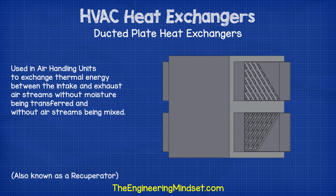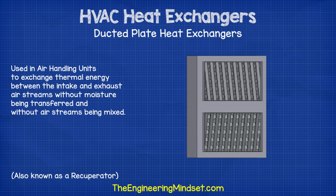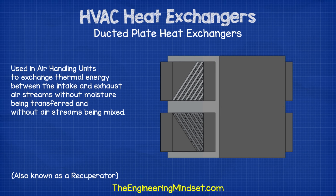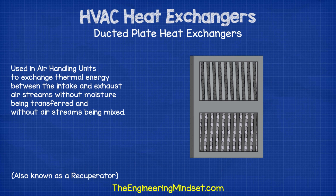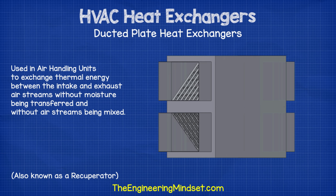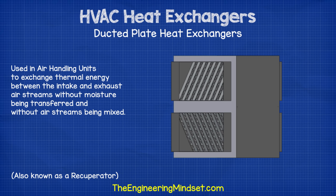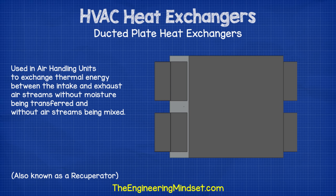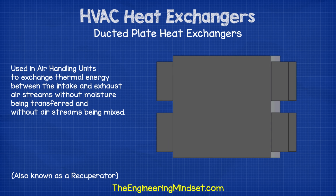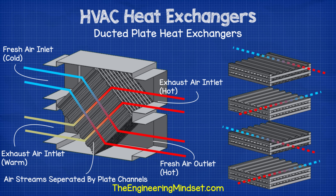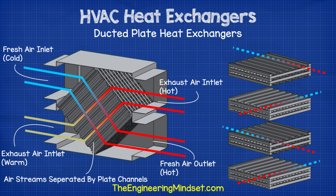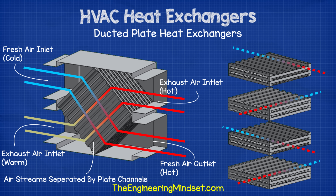Duct plate heat exchangers are used in air handling units to exchange thermal energy between the intake and exhaust air streams without moisture being transferred and without air streams being mixed. The heat exchanger is made from thin sheets of metal, typically aluminum, with the two fluids flowing in opposite diagonal directions. The heat from one stream is convected into the thin sheets of metal which separates the streams, then conducted through the metal where it is carried away by forced convection into the other stream.